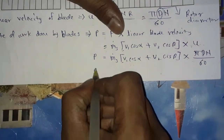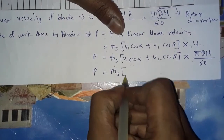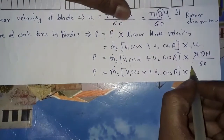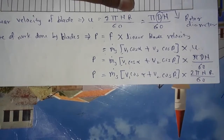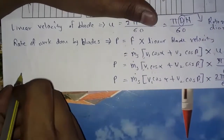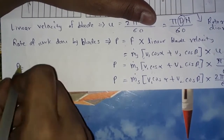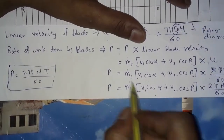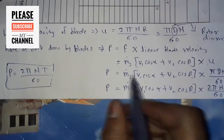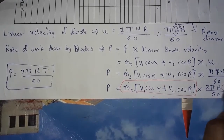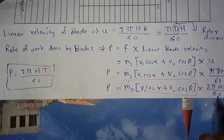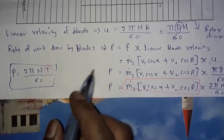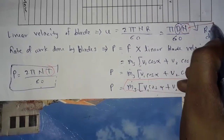Simplifying further: P = ṁ·(V1·cos α + V2·cos β)·(2πnR/60), which can be written as P = 2πnT/60, since torque T consists of the force times radius terms. This is our power — the rate of work done by the blades — and here n is the RPM of the blade.